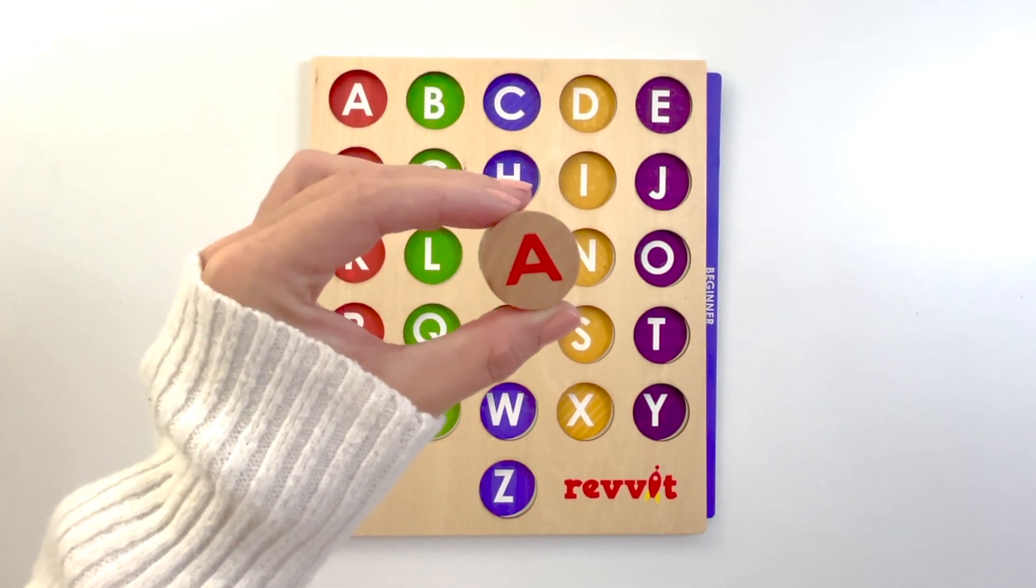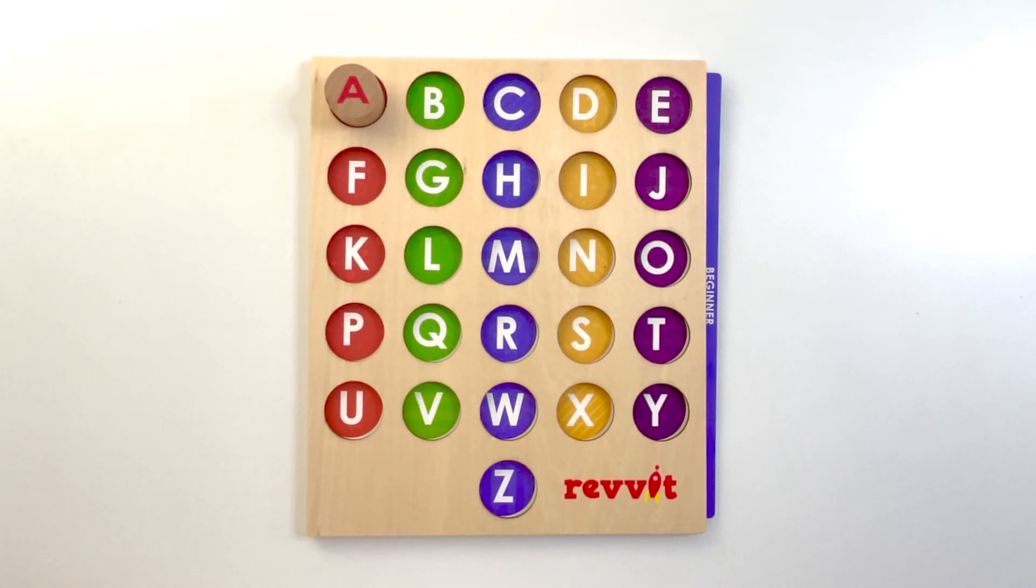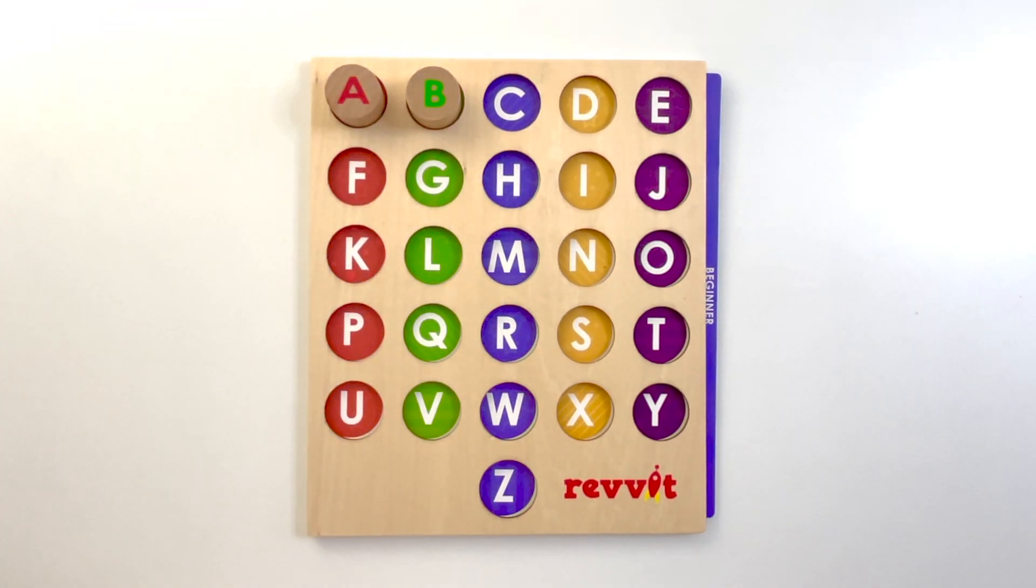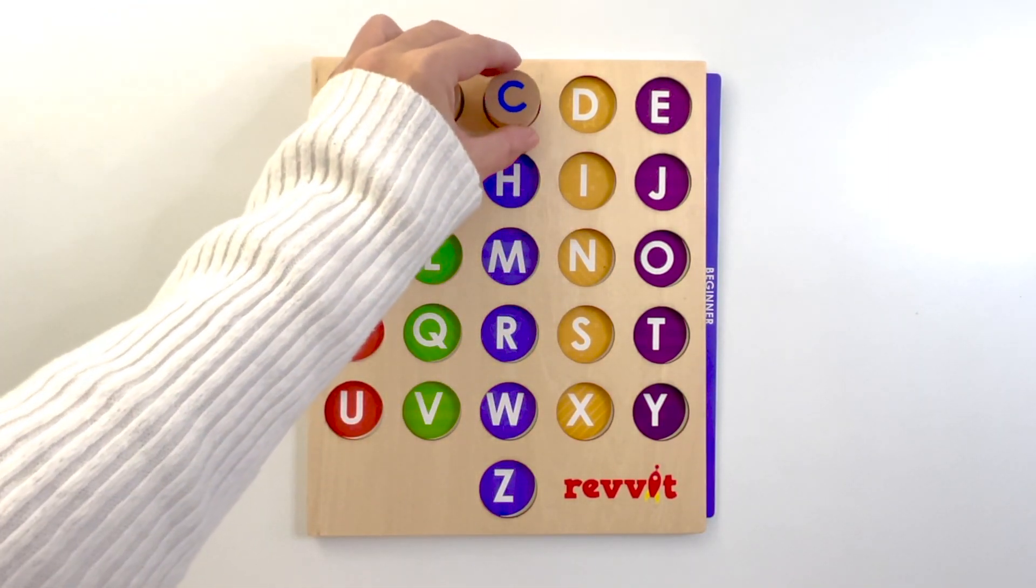Letter A. A says A and A. B. B says B. C. C says C.